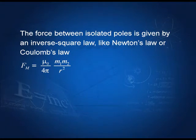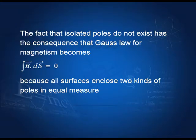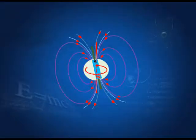The force between two poles is like the force of gravitation between two masses, or the force of electric attraction between two charges: it equals μ₀/4π times m₁m₂/r², inversely proportional to r². And Gauss's law for magnetism states that the surface integral B·dS equals zero, which is the statement that monopoles do not exist and that magnetic field lines must form closed loops.